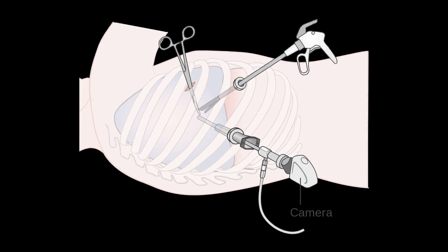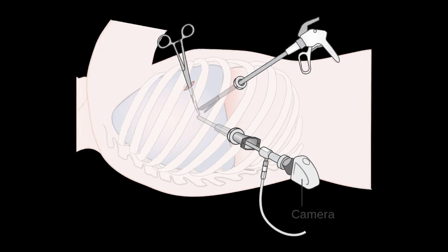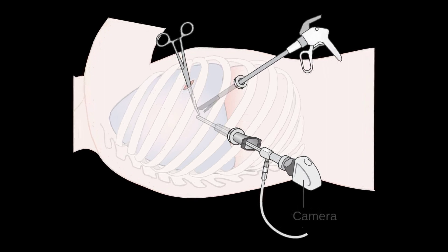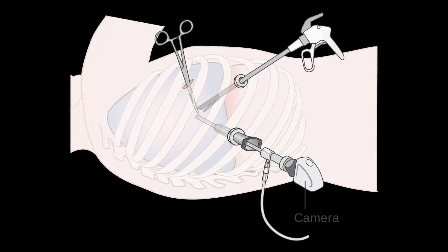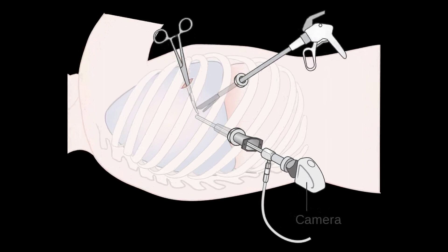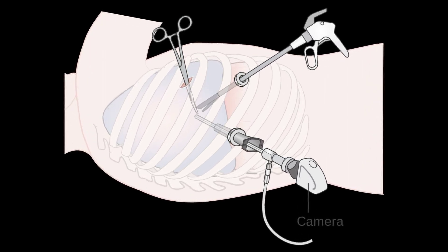Surgery is done with the help of pneumonectomy, lobectomy, wedge resection, and nowadays we have more recently advanced VATS, which is the video assisted thoracoscopic surgery.